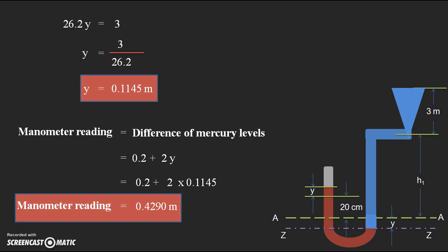The final reading of the manometer means we need to take the difference of mercury levels in the left and right limbs with the help of the datum line. I hope you understand the procedure to find the manometer reading according to the data given in the problem. If you still have any doubts, please feel free to comment on the video so I can clarify. Thank you all.